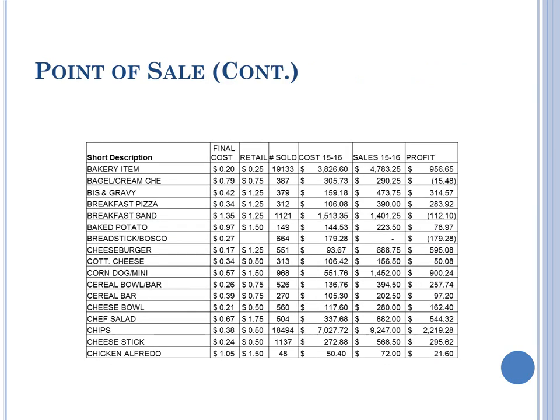Coming into the district that had been losing money for some time, the food service director looked at her entire program and made changes. Her biggest change for the non-program food was to break down each and everything she serves aside from the reimbursable meal. In this slide, you can see on the top line of the spreadsheet what she has listed: the item, cost, retail sold for, quantity sold, overall cost per item, sales for the year, and her profit per item. As you can clearly see from this section of her spreadsheet, she did not make profit on every item. Not every item needs to be marked up to the same percentage.